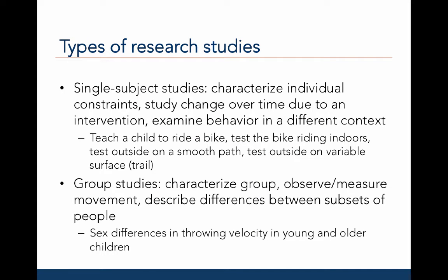So far, we have only plotted developmental changes in one or a couple of people, but this isn't exactly research. Most research studies go beyond just plotting one type of developmental change or characterize more than one person at a time. For example, in single-subject studies, we might characterize individual constraints, study changes over time due to an intervention, and then examine the behavior in a new context. For example, teaching a child to ride a bike and then testing the skills indoors, outdoors on a smooth path, or outdoors on a variable surface like a trail.